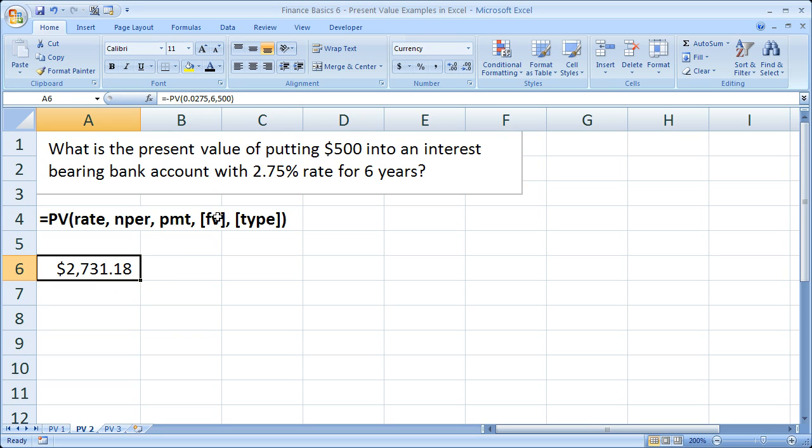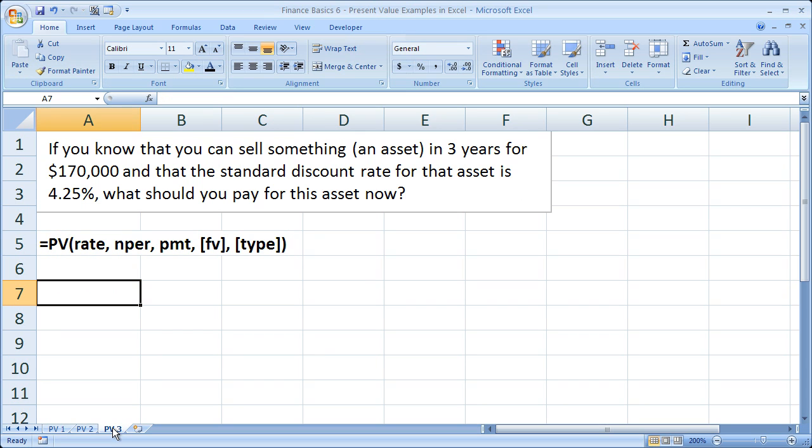So let's go on to the third example. It's a little bit different, maybe a little bit trickier, but same premise. So if you know that you can sell something, say an asset, in three years for $170,000, right, and you know that the discount rate for the asset is 4.25 percent per all of your due diligence and your own research, well then what are you going to pay for the asset now? So this is a present value, it's a little bit different, but the point is how much money are you going to shell out now so that you can sell for $170,000 in the future with a 4.25 percent discount rate.